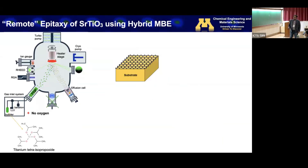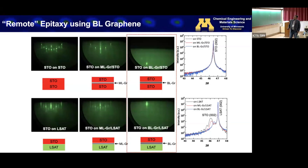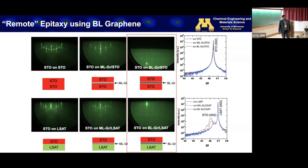With graphene transferred onto a substrate, we loaded it into the vacuum chamber and started growing strontium titanate using TTIP and strontium with no oxygen. RHEED shows: STO on STO looks streaky; STO on monolayer graphene looks streaky; STO on bilayer graphene on STO also shows streaks; and on LSAT substrate, there are some faint streaks. So it looks like film has grown in the presence of the graphene layer on top of the substrate.